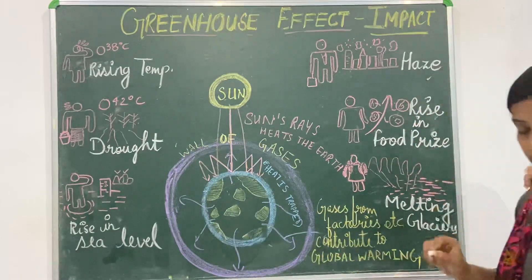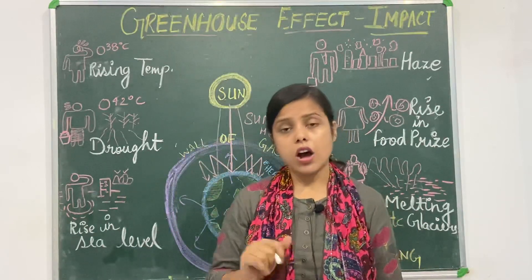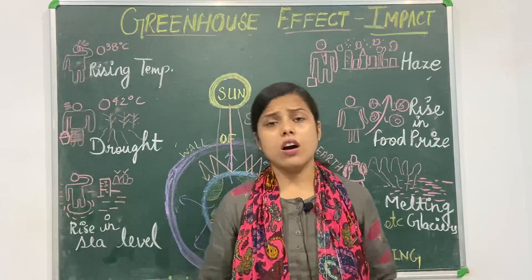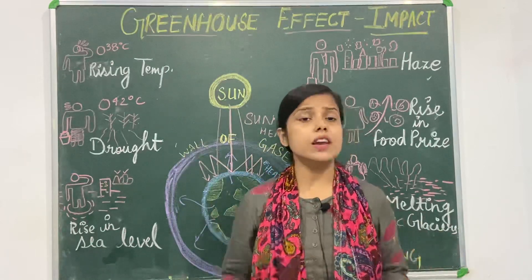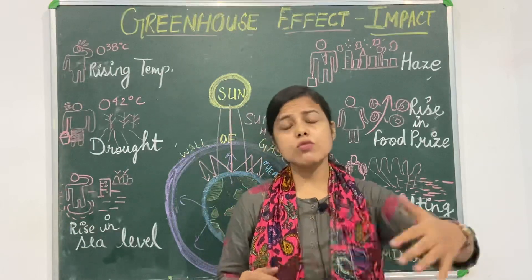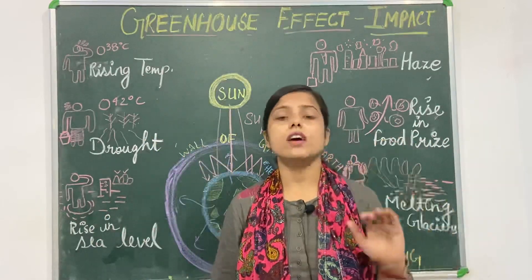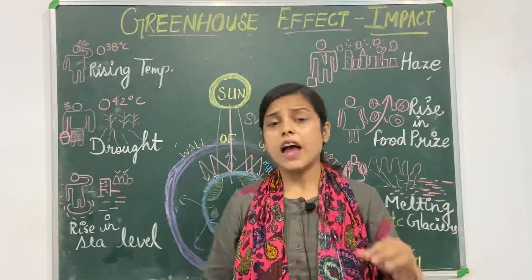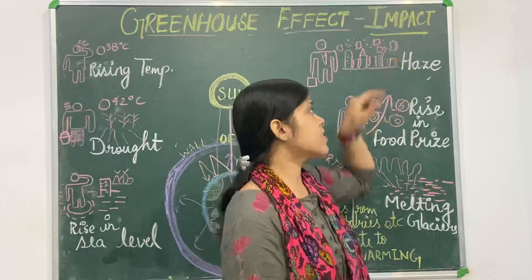The next point is haze. Haze means when there is more carbon dioxide in the atmosphere due to industrialization — more industries being set up and forests being cleared — you are not able to see through the atmospheric air. The air is not clear because of water droplets and other particles, so you cannot see through it clearly. That type of atmosphere is known as haze.